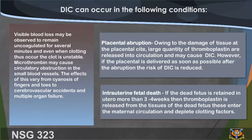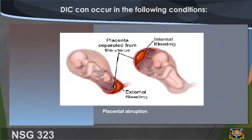Placenta abruption: owing to the damage of tissue at the placenta site, large quantities of thromboplastin are released into circulation and may cause DIC. However, if the placenta is delivered as soon as possible after the abruption, the risk of DIC is reduced. Intrauterine fetal death: if the dead fetus is retained in utero more than 3–4 weeks, thromboplastin is released from the tissues of the dead fetus, enters the maternal circulation, and depletes clotting factors.